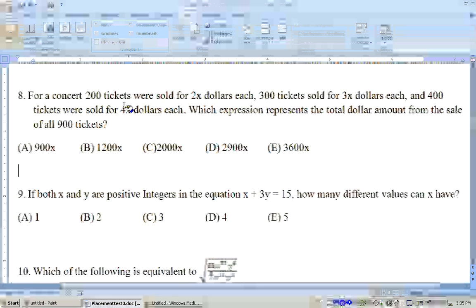Problem 8 says for a concert, 200 tickets were sold for 2x dollars each, 300 tickets for 3x dollars each, and 400 tickets were sold for 4x dollars each. Which expression represents the total dollar amount from the sale of all 900 tickets?